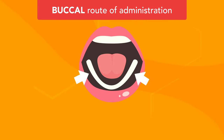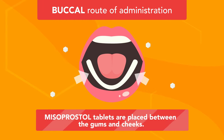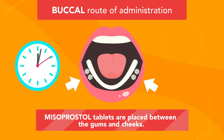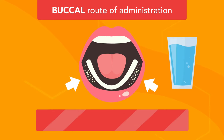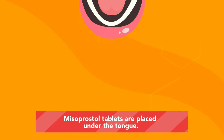Buccal route of administration: Misoprostol tablets are placed between the gums and cheeks. They must be kept there approximately 30 minutes until they dissolve, and then the remaining portions should be swallowed with water.